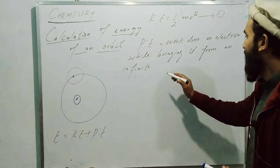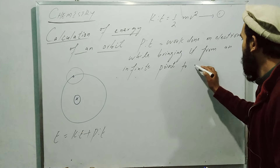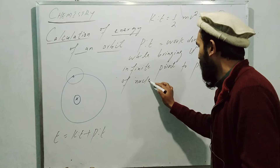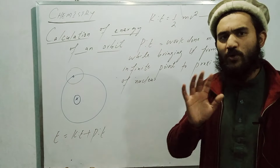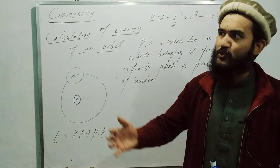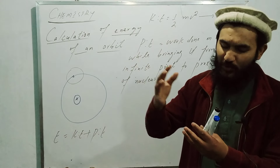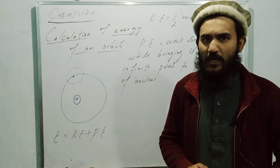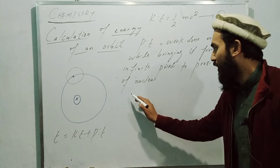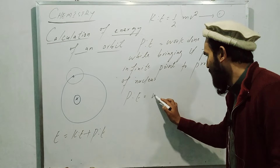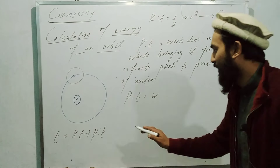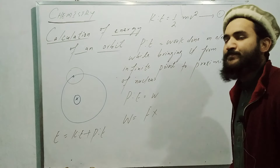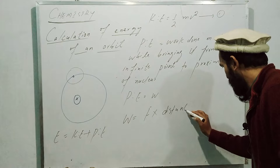So potential energy equals the work done on the electron while bringing it from an infinite point to the proximity of the nucleus. You have studied in physics that work done W is equal to force multiplied by distance, where distance is r.